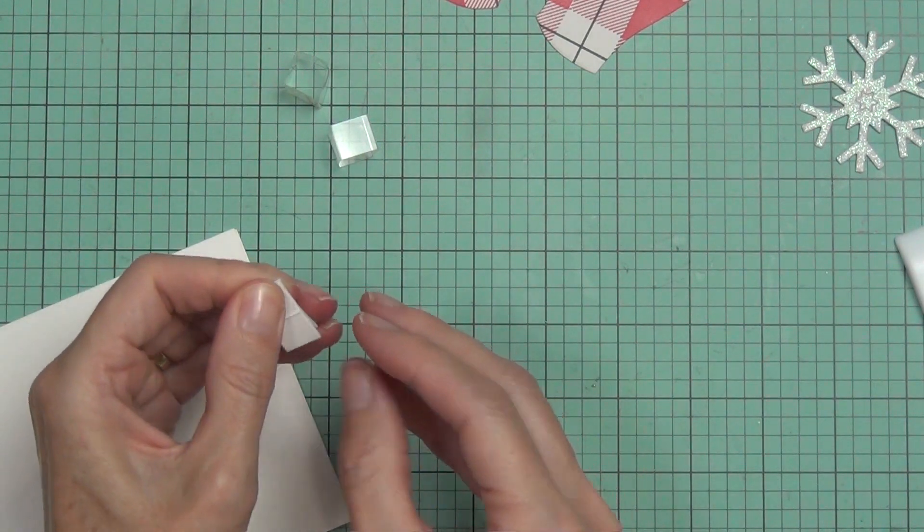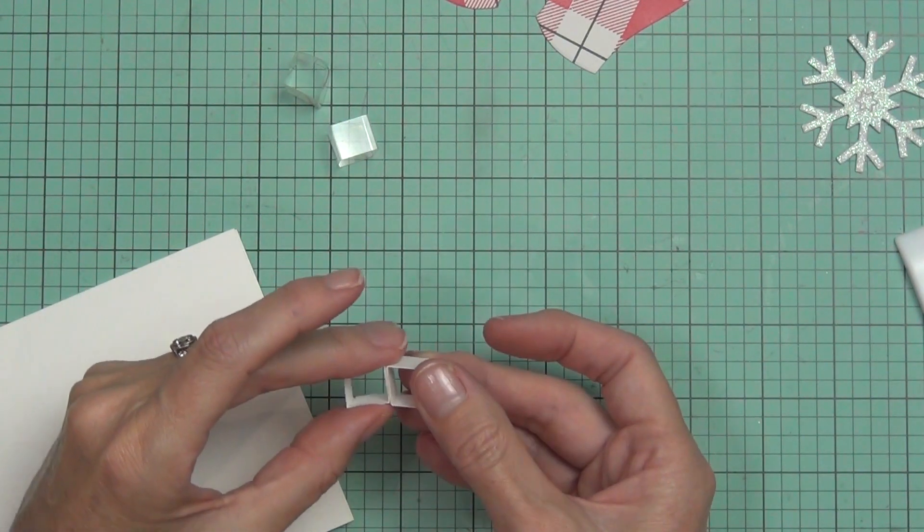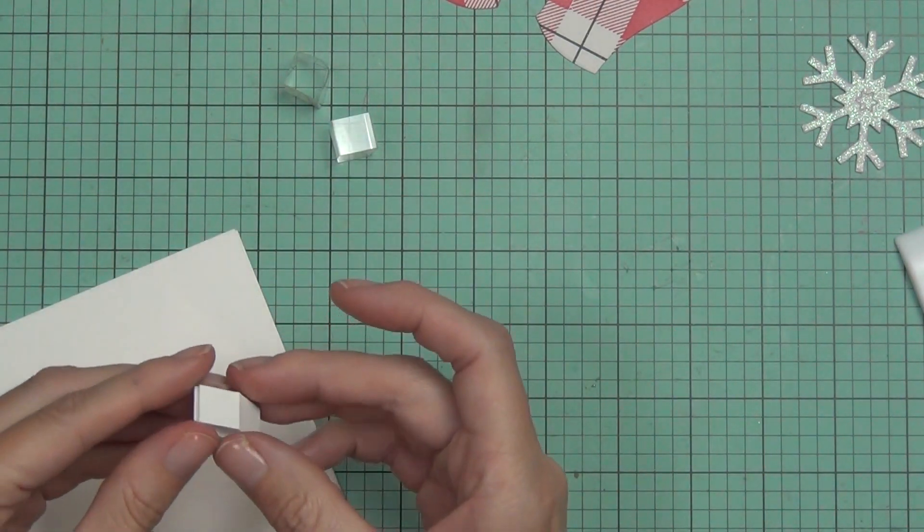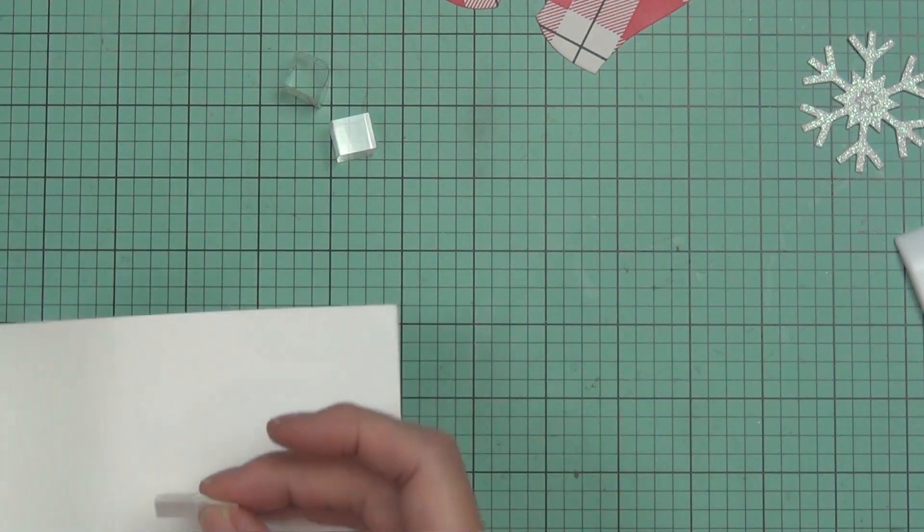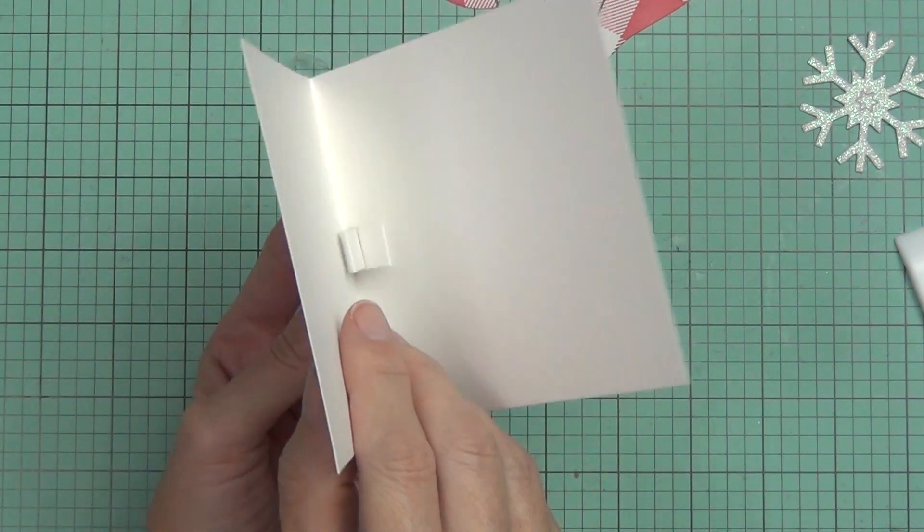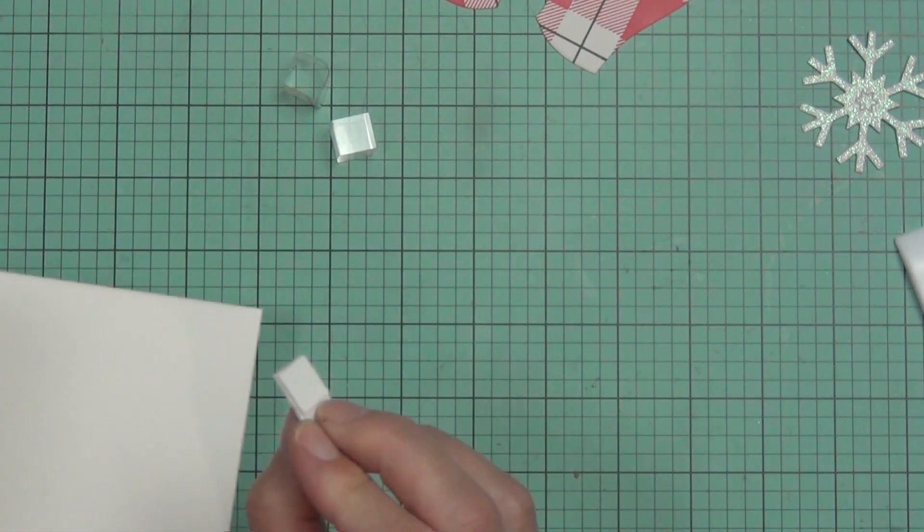So next I'm going to attach it to the center of the card. So just to help visually, I'll just hold it in place and fold the card over, and then I know exactly—it just gives me an idea where I want to put it, where I need to put the tape.